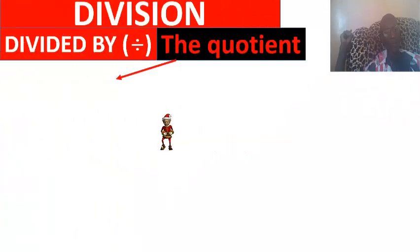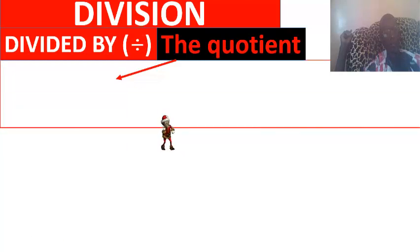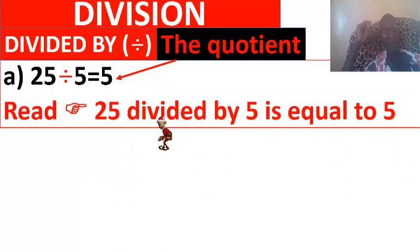Now division. Division is symbolized by this sign, and you say divided by. The result is called the quotient. For example, 25 divided by 5 is equal to 5, or simply equals 5.